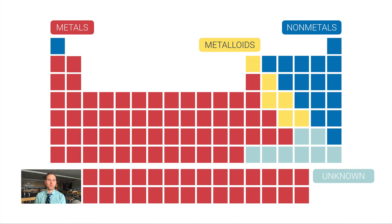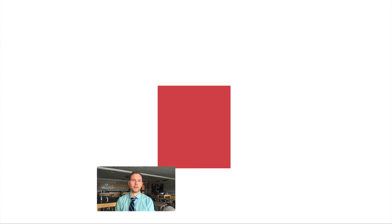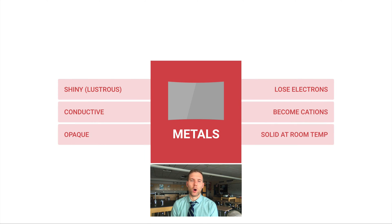Let's start with metals because they are most of the periodic table, something like 75-80%. Metals are shiny, sometimes that's referred to as lustrous. Metals are also conductive of both electricity and heat - thermal and electrical conductors. Metals are generally opaque, meaning they're not see-through. A wall would be opaque whereas a window would be transparent.